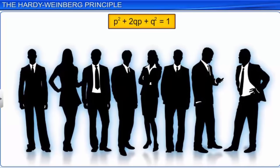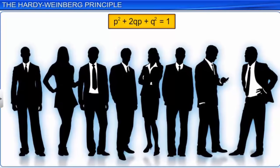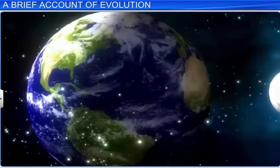Evolution is a slow and sophisticated process. The Hardy-Weinberg principle helps understand evolution as it provides a baseline to measure the genetic change in a population.